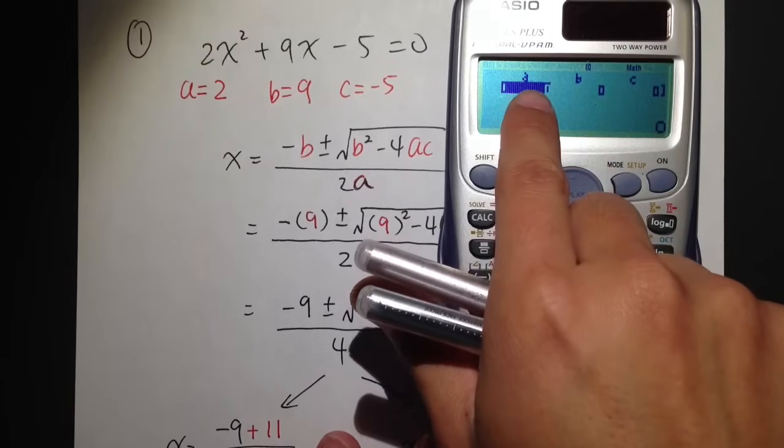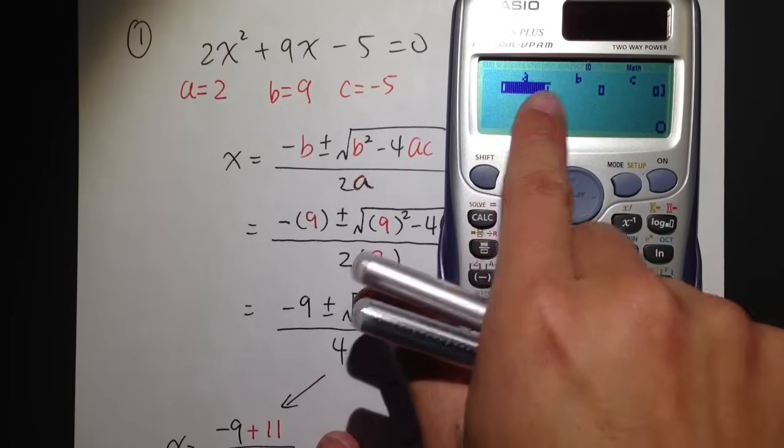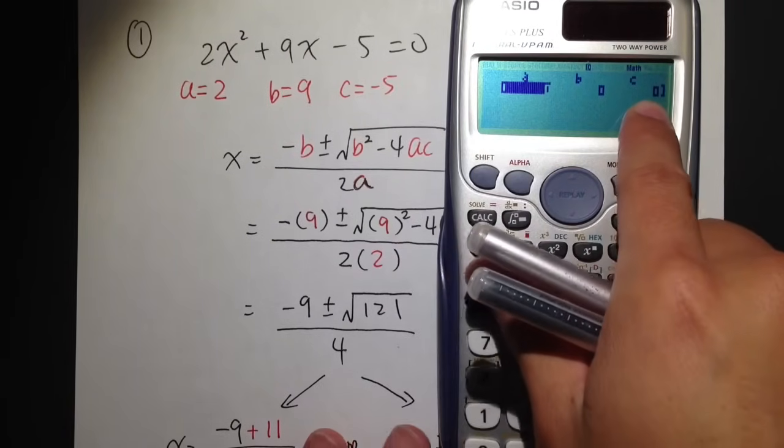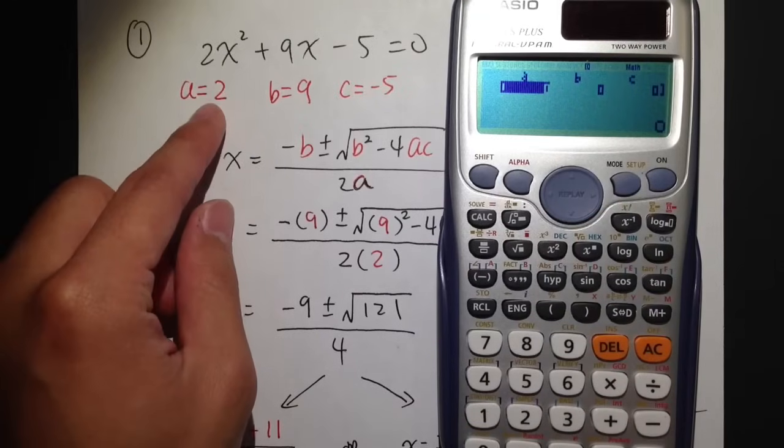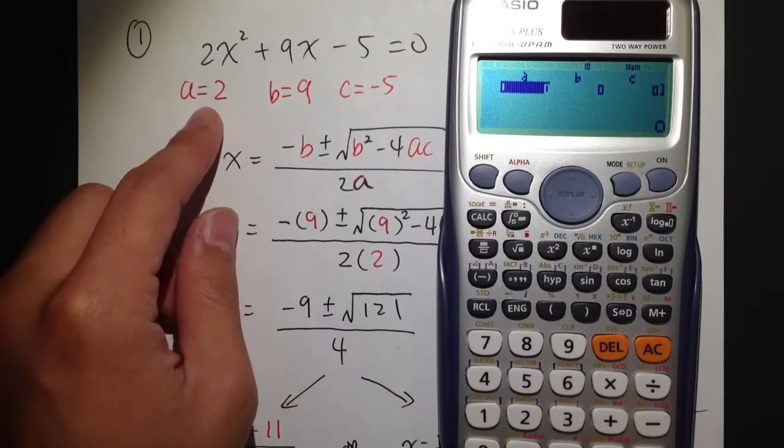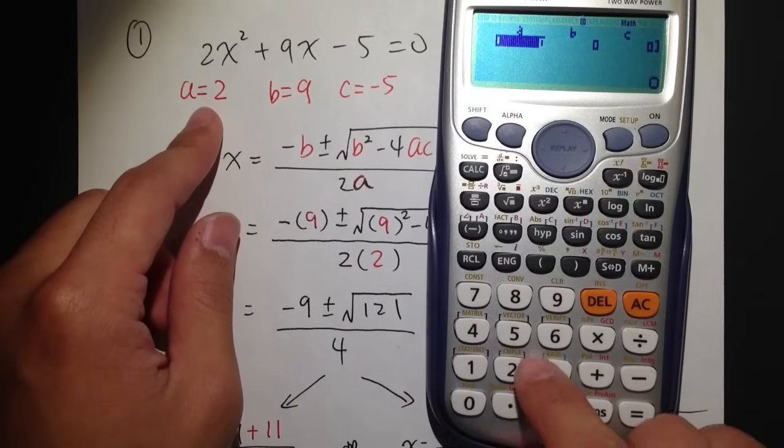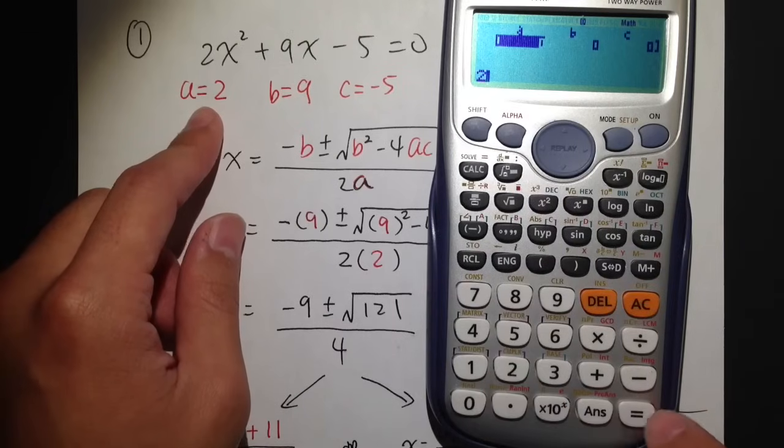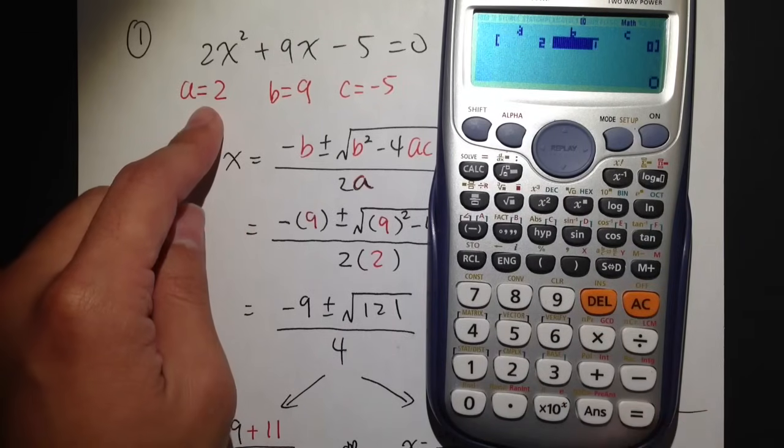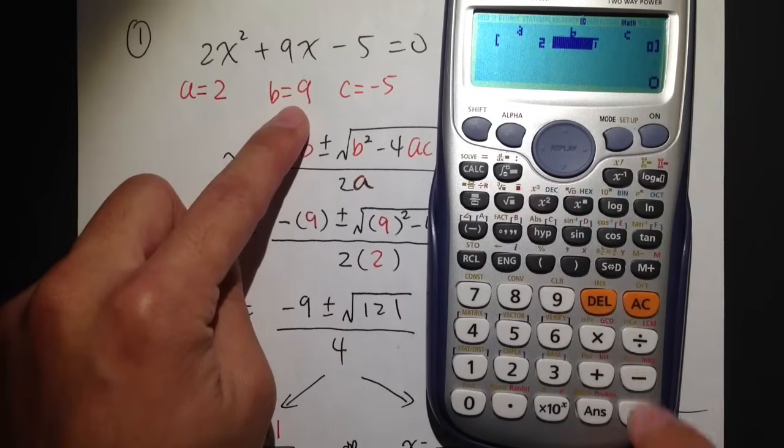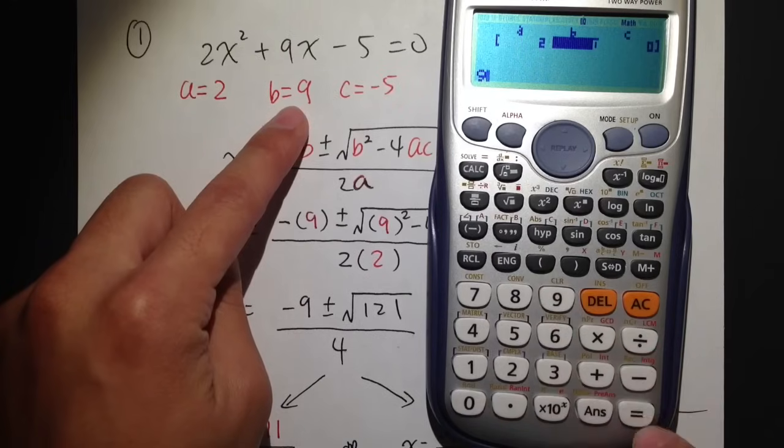Right here, it asks you that A is equal to what, B is equal to what, and C is equal to what. We have already determined that A is equal to 2, so we just need to put 2 in A and hit equal. B is equal to 9, so hit 9 right there and hit equal.